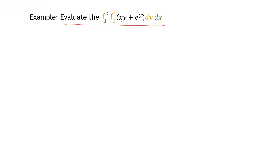We start with a simple example: evaluate the integral from 1 to 2, and from 3 to 4, of (xy + e^y) dy dx. First identify the limits of y and x. The order of integration is dy dx, so the limit of y is 3 to 4 (shown in yellow) and the limit of x is 1 to 2. Since both limits are constant, we can integrate in either order; the order of integration doesn't matter.